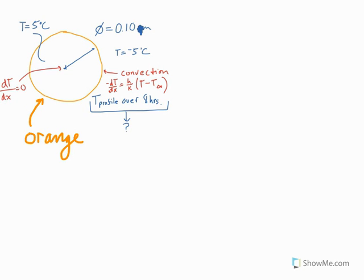It'll be easiest to give you an example as we walk through this process. For this example, we have an orange. The orange starts out at 5 degrees Celsius, and its outside environment is negative 5 degrees Celsius. We want to know what the temperature profile will look like over a span of 8 hours. We know there's some convection happening at the surface of the orange, and at the center of the orange, we know the temperature flux is equal to zero.